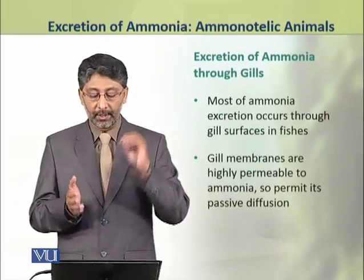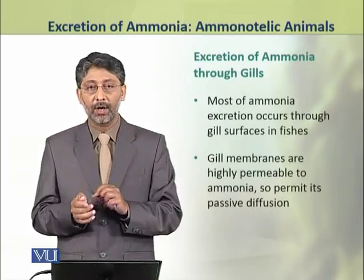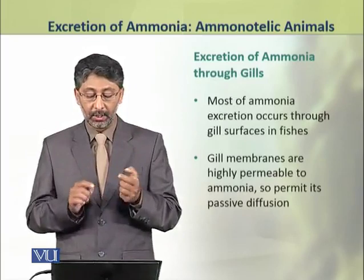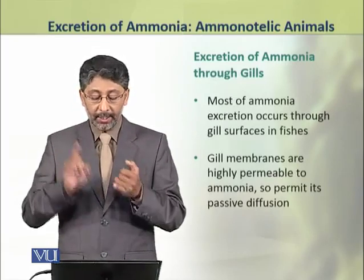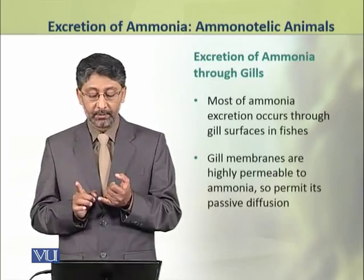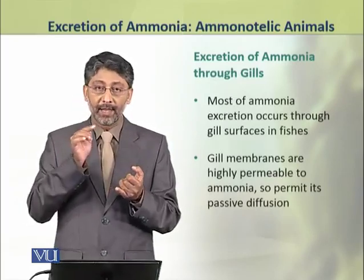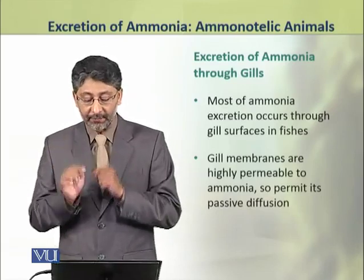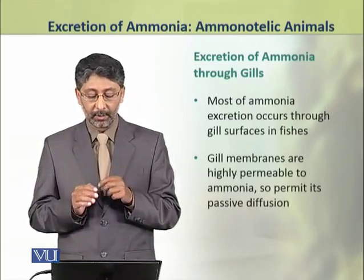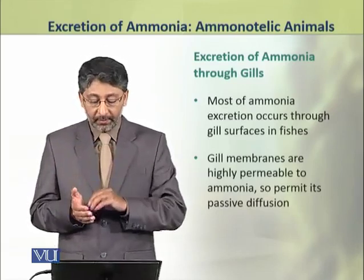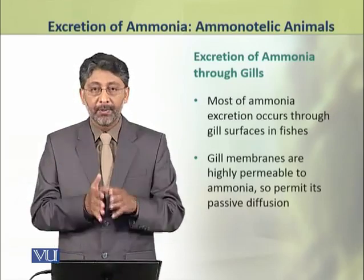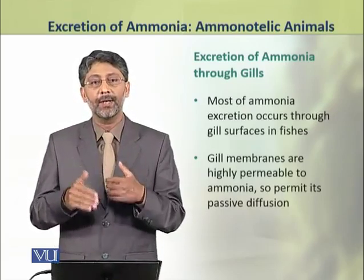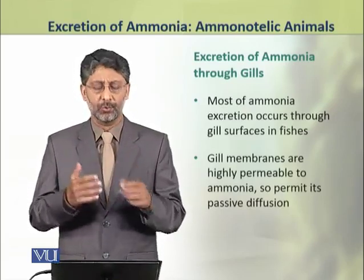Now we shall discuss the excretion of ammonia through gills in fishes. Most of the ammonia in fishes is excreted across the gill surfaces. The gill membranes are highly permeable to ammonia, so they permit its passive diffusion.